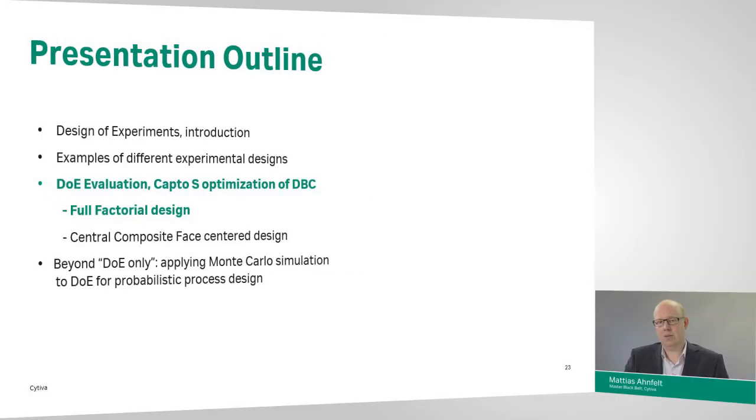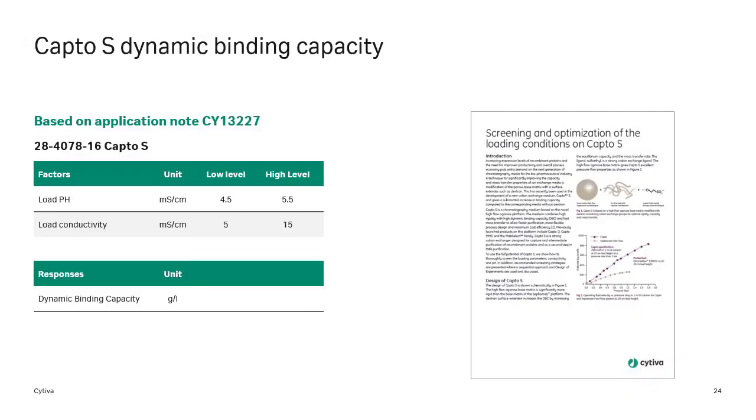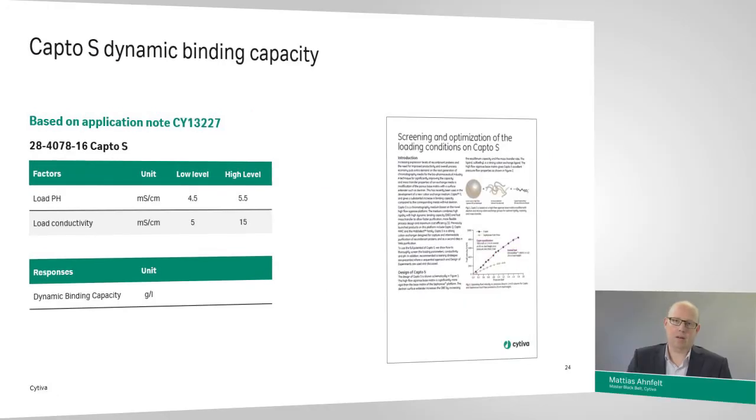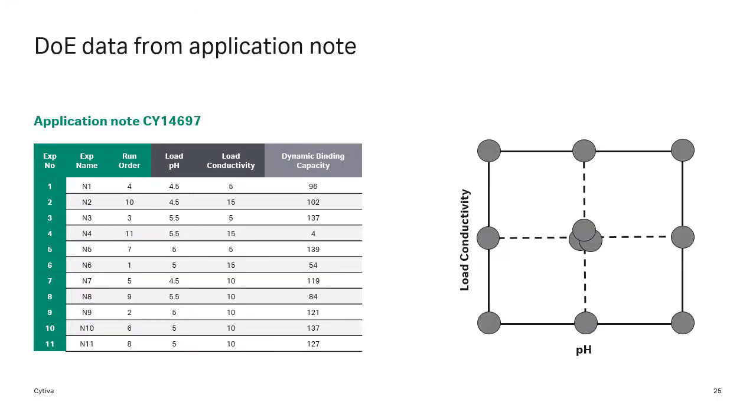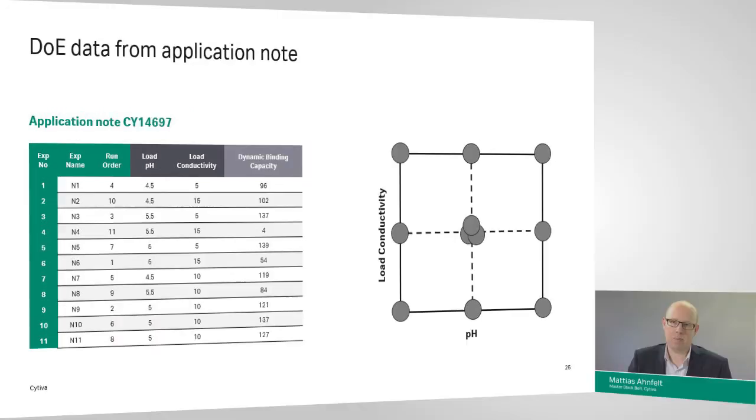We'll do this by looking at an application on dynamic binding capacity optimization on Capto S. In the first part, and what's the focus of today's talk, we'll be looking at an evaluation of a full factorial design data on this Capto S optimization. The details on the actual application note are available on the web. It deals with how dynamic binding capacity for a particular protein depended on the load pH and the load conductivity when running Capto S.